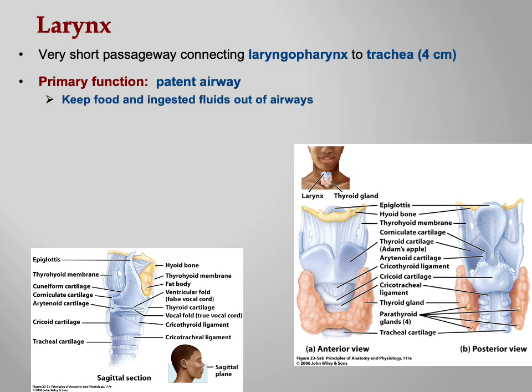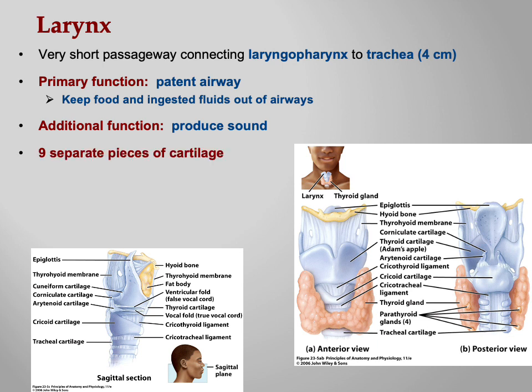The larynx keeps food and ingested fluids out of your airways — we want food going down the esophagus and air going down the trachea. Additionally, it produces sound: this is where your vocal cords are.